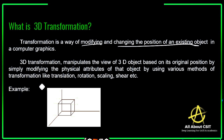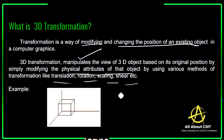If you consider 3D transformation, it is going to manipulate the view of a 3D object based on the original position. You consider the original position and that position is going to change its coordinates — that is manipulating the view — by modifying the physical attributes of that object using various techniques: translation, rotation, scaling, shearing, and now we are discussing reflection.